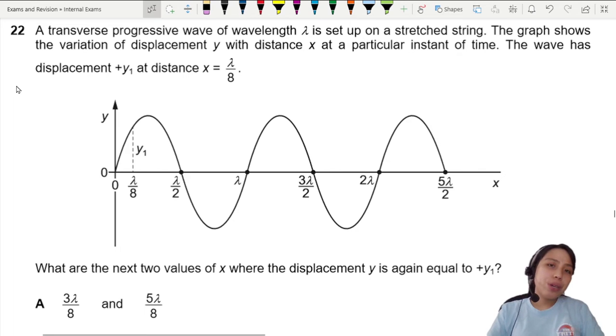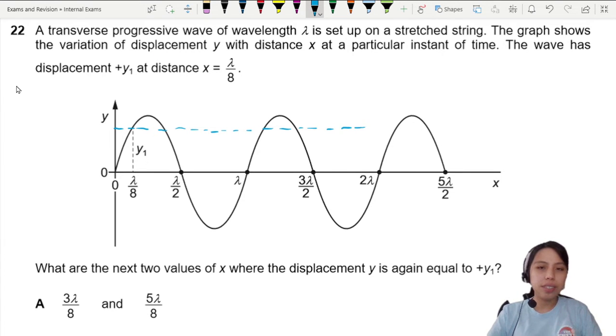So maybe what you could do is draw a dotted line to see where do you hit this height again. The next two. Can't only draw so far. Here can already. We have one position here. We have another position here where you are at the same height. And the next one will be over here.